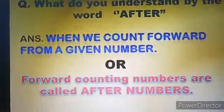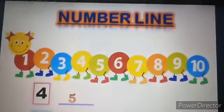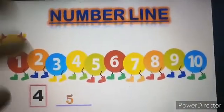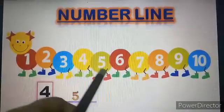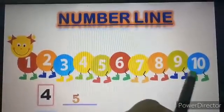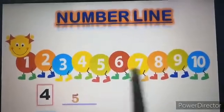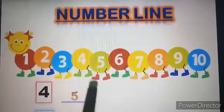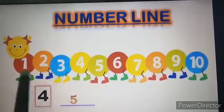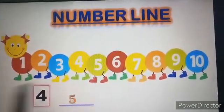Let us see. Here one number line has been drawn. See 1, 2, 3, 4, 5, 6, 7, 8, 9 and 10. These numbers are what? You can say forward counting numbers or else you can say after numbers also. Understood?